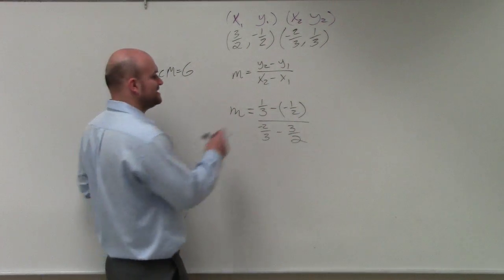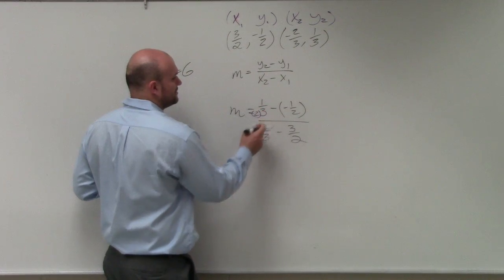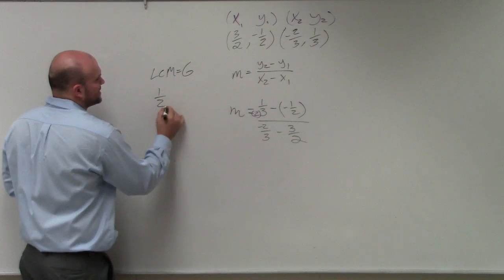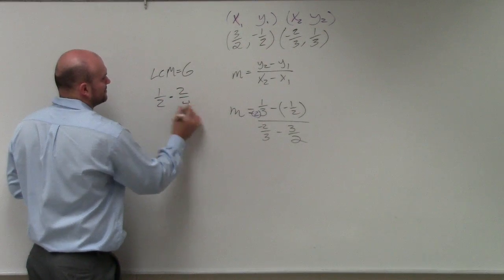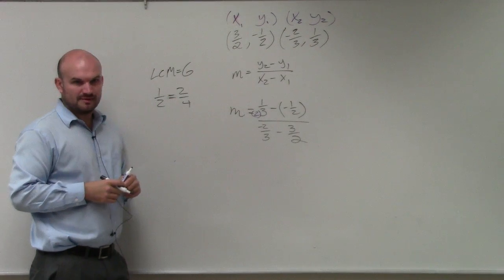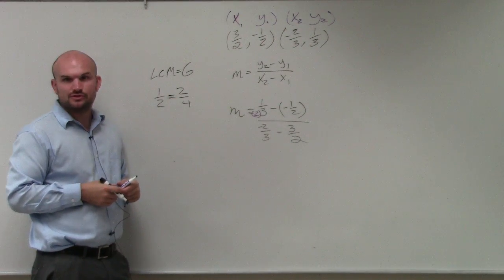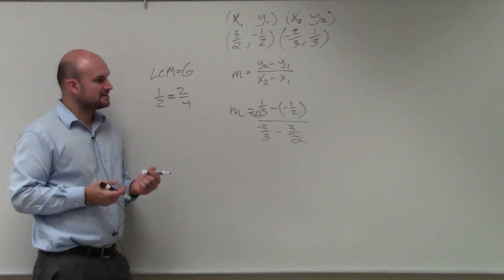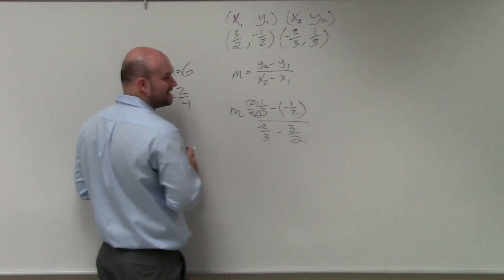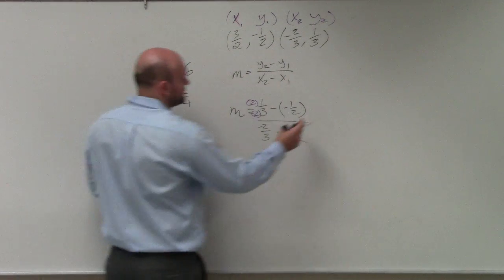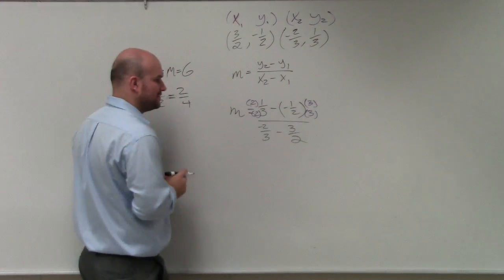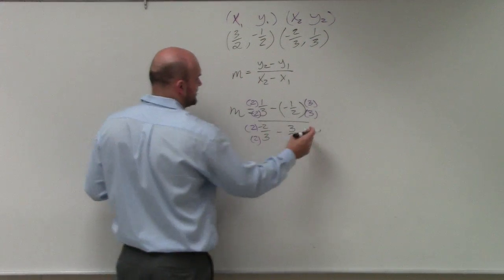So to get 3 to be 6, I need to multiply by 2. However, in fractions, if you look at the fraction 1 half and 2 fourths, those are equivalent fractions. Right? They mean the exact same thing. 1 half is the same thing as 2 over 4, same thing as 3 over 6. So to have equivalent fractions, we have to multiply the same number on the top and the bottom. I have to do the same thing over here. To get 2 to be 6, I need to multiply by 3 over 3. And I do the exact same thing for these two fractions down here.